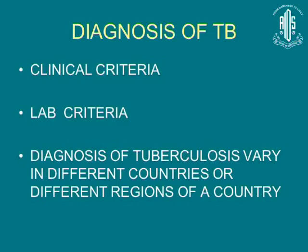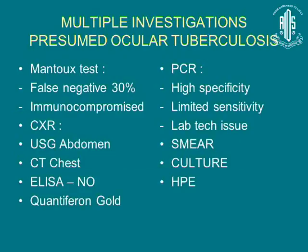For diagnosis, we have clinical and lab criteria, but the diagnostic criteria vary in different countries and even across different regions of the same country. We have a long list of tests for confirming presumed ocular tuberculosis: the Mantoux test, chest X-ray, USG abdomen, CT chest, ELISA (not commonly used), QuantiFERON Gold, PCR, smear culture, and histopathological examination.